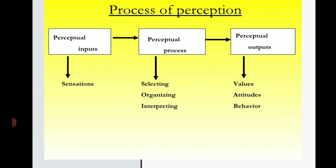Now let's discuss what is the process of perception — also an important topic. The process of perception starts with stimuli; we give attention to stimuli and receive them. There are three steps: perceptual inputs, perceptual process, and perceptual output. Under perceptual inputs, we talk about sensation — all inputs such as people, events, groups, or any program being conducted. These are all inputs.